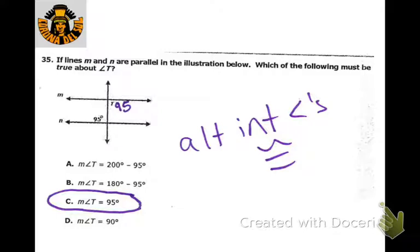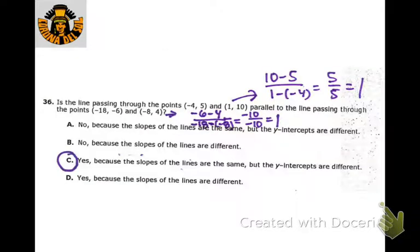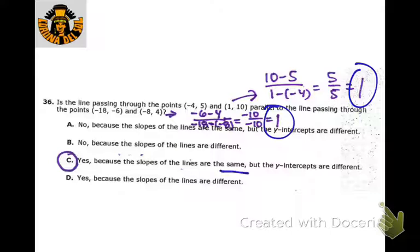This is another alternate interior angles being congruent, so T has to be 95. Similar to another one we did — we're looking at what's up with these lines. We subtract the y's over the x's and find that both have a slope of 1. The slopes are the same and the y-intercepts are different, so they're parallel.